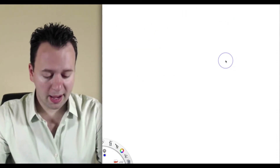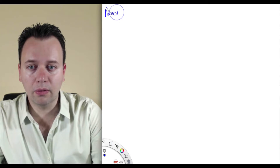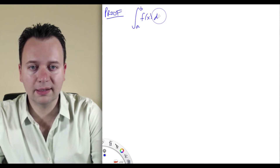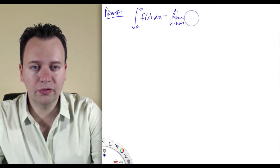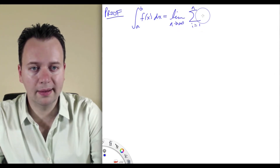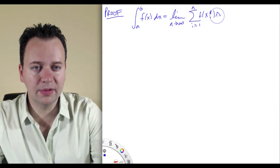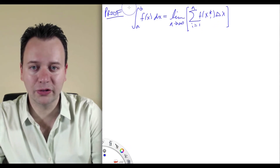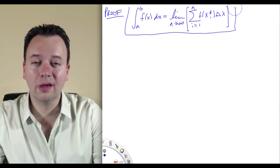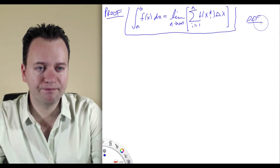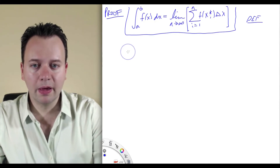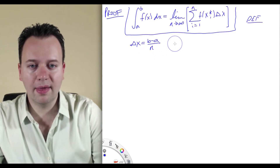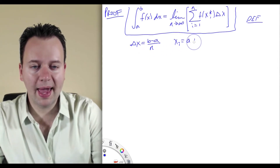So let's see the proof of this — let's see why it's true. We start off by unraveling the definition. The integral from a to b of f of x dx is the limit as n goes to infinity of the sum i equals 1 to n of f of x_i* times delta x. That is the definition of the definite integral. Now delta x is going to be b minus a over n, and x sub i is going to be a plus i times delta x.